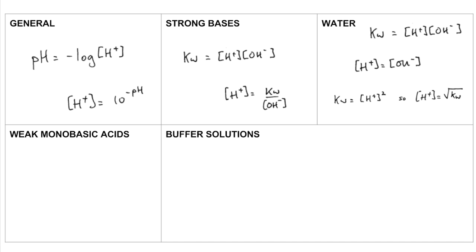So weak monobasic acids now, they tend to be represented in the form of HA. So they partially dissociate into the H plus ion and A minus ion. And because they're monobasic acids, H plus concentration and A minus concentration will be the same.